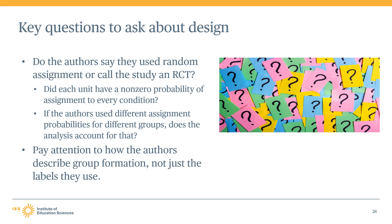In other words, the way that study authors describe group formation is often more important than the labels they use. Paying attention to how the authors describe group formation will help reviewers determine whether the study is eligible for meets WWC standards without reservations. Reviewers should ensure that the description of the group formation reflects the type of design the study authors say they used — for example, study authors may claim to use an RCT design, but a reviewer might discover that the process they used was not truly random.